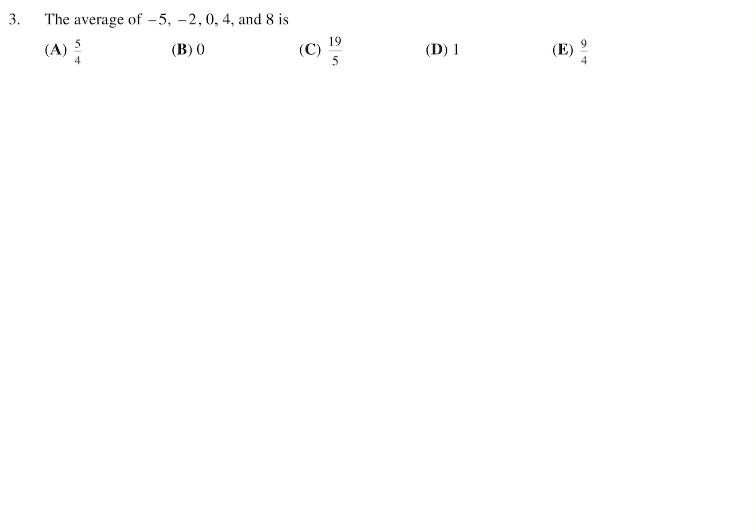The average of negative 5, negative 2, 0, 4, and 8 is. To figure out the average, you add the numbers and then divide by the total number. So there was 1, 2, 3, 4, 5, so we divide by 5. The top is equal to 5, and we are dividing by 5. Therefore, 5 over 5 is equal to 1. So the answer in this case is D.